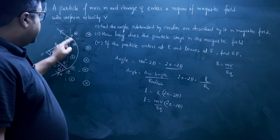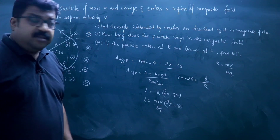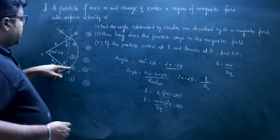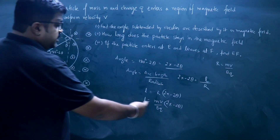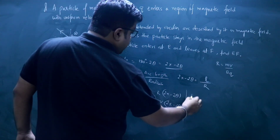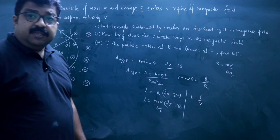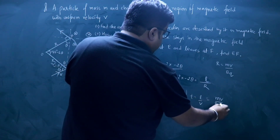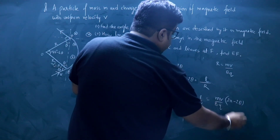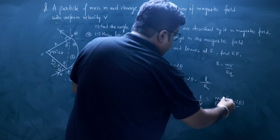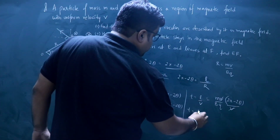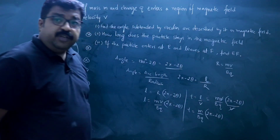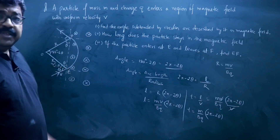This is the length of this arc. Since the speed V is uniform and the magnitude of speed does not change inside the magnetic field, the time taken to travel from point E to point F is time equals L divided by V. Substituting L, the time equals (M / BQ) times (pi minus 2 theta). This is the time spent by the charge particle inside the magnetic field.